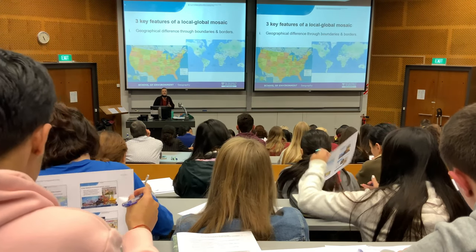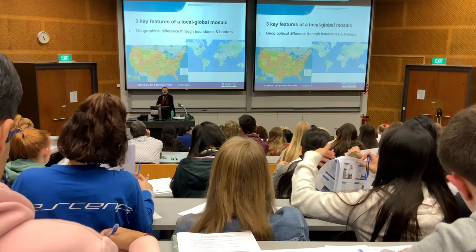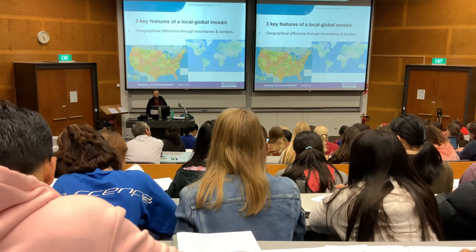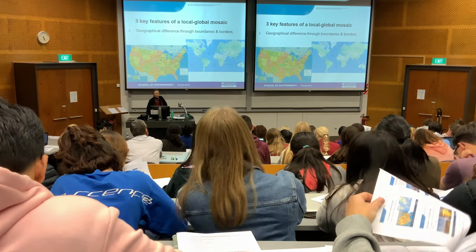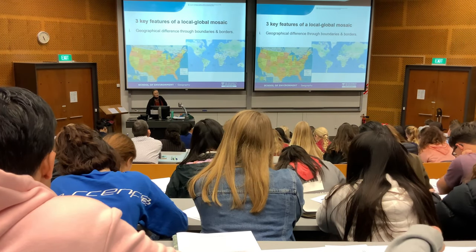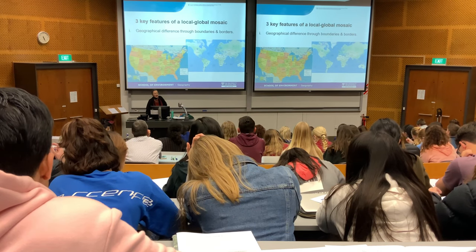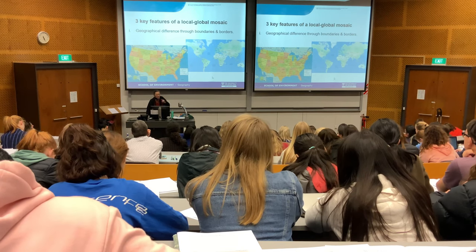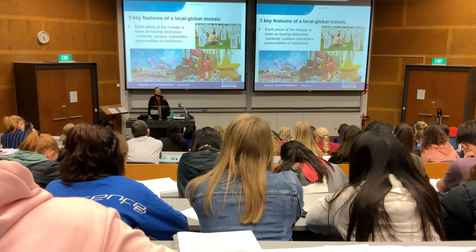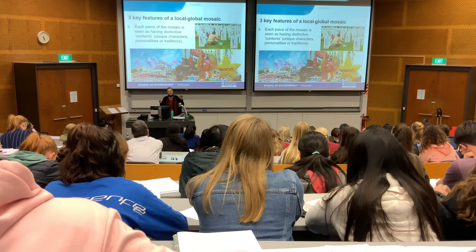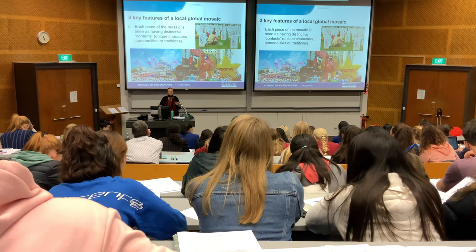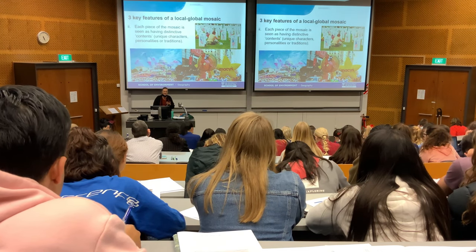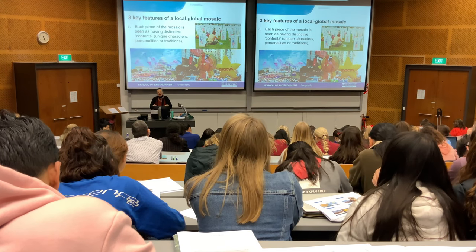There are three key features of a mosaic. One is about boundaries and borders. You might have a boundary of the United States in a global sense, and closer up you've got state-based borders. Within those boundaries and borders, what's distinct about the place you're talking about? Does it have any unique characteristics, personalities, and traditions?